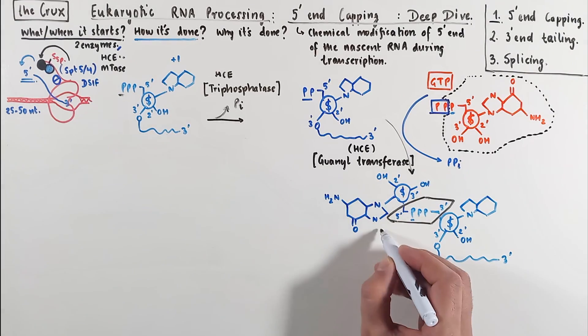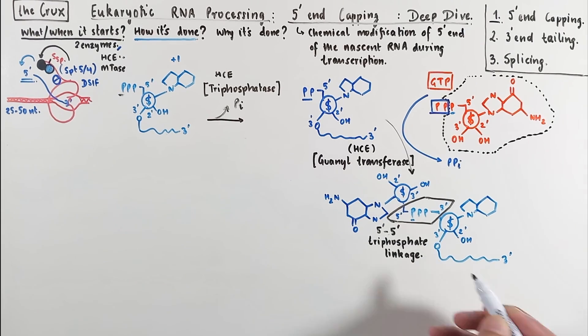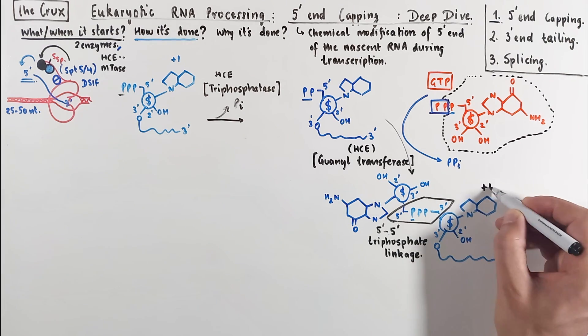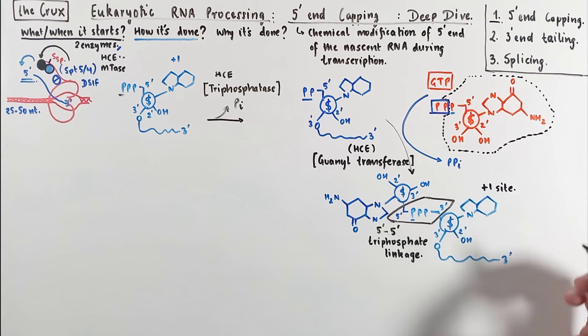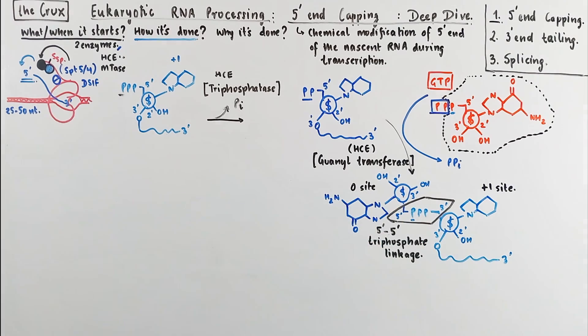This triphosphate linkage is quite different from the canonical 5' to 3' phosphodiester linkages. So now getting more specific about notations, we've said that this is the plus 1 site, and this transferred GTP is the site 0.